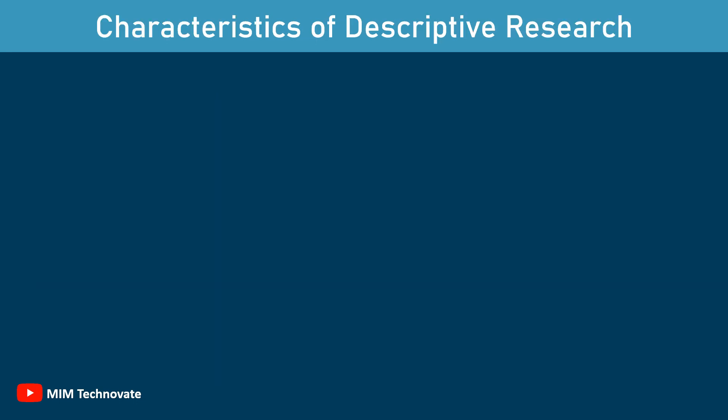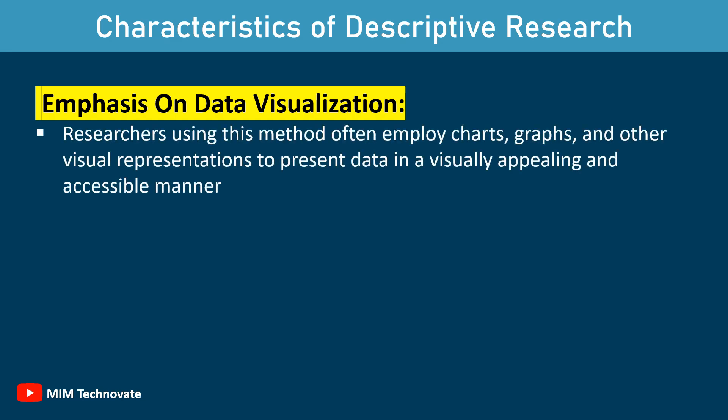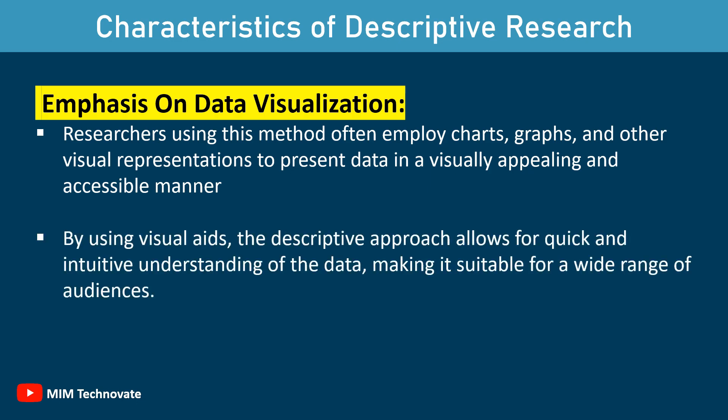Characteristics of Descriptive Research. One of the key characteristics of descriptive research is its emphasis on data visualization. Researchers using this method often employ charts, graphs, and other visual representations to present data in a visually appealing and accessible manner. By using visual aids, descriptive research allows for quick and intuitive understanding of the data, making it suitable for a wide range of audiences.